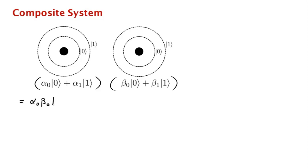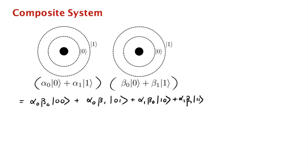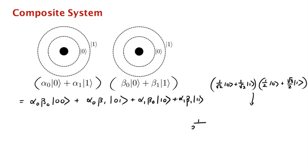The amplitude of |00⟩ is alpha_0 beta_0, the amplitude of |01⟩ is alpha_0 beta_1, the amplitude of |10⟩ is alpha_1 beta_0, and the amplitude of |11⟩ is alpha_1 beta_1. For example, suppose the first qubit is in the plus state and the second qubit is in the state (1/2)|0⟩ + (√3/2)|1⟩. Then the composite system is in the state (1/2√2)|00⟩ + (√3/2√2)|01⟩ + (1/2√2)|10⟩ + (√3/2√2)|11⟩.